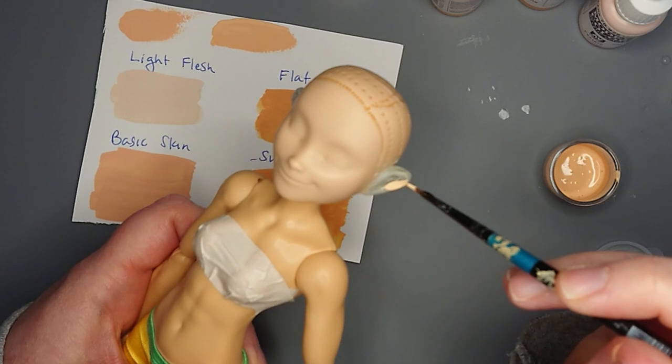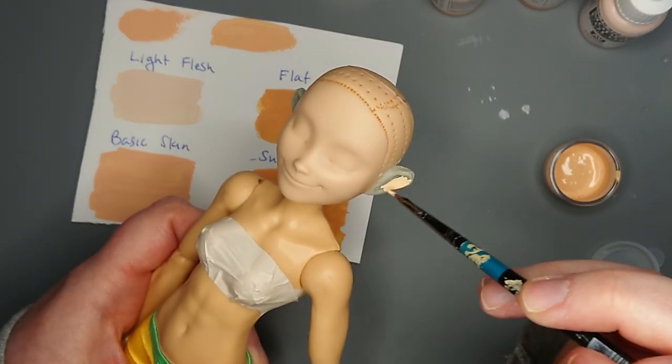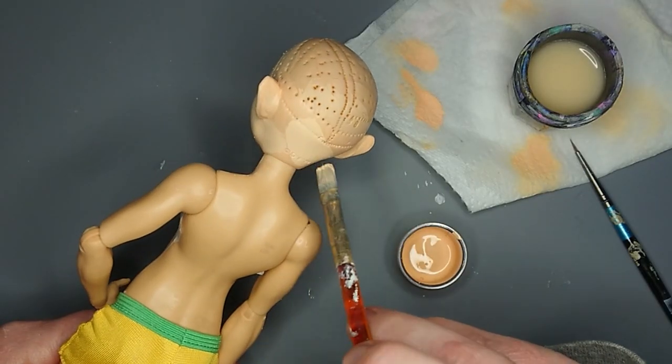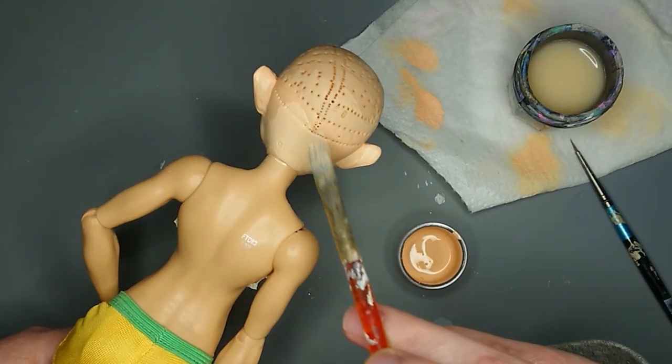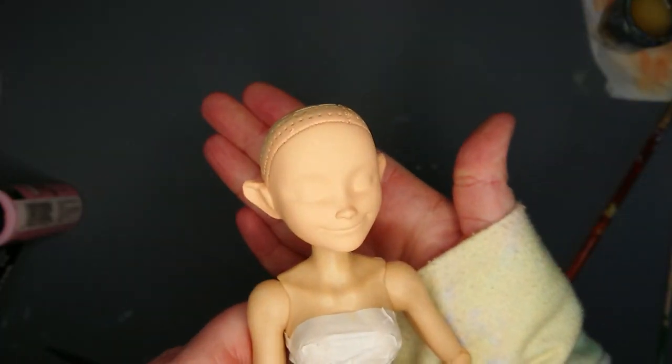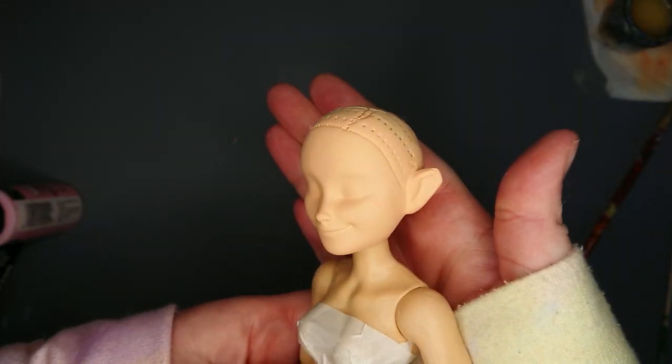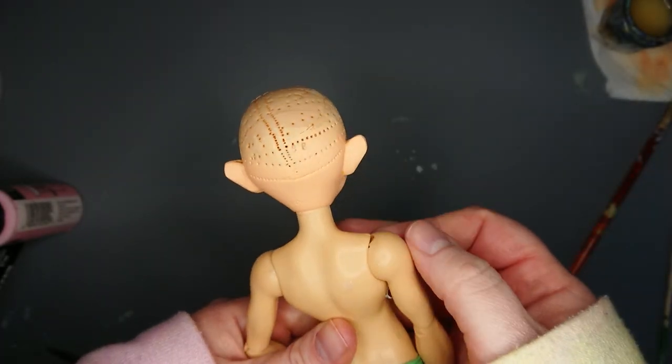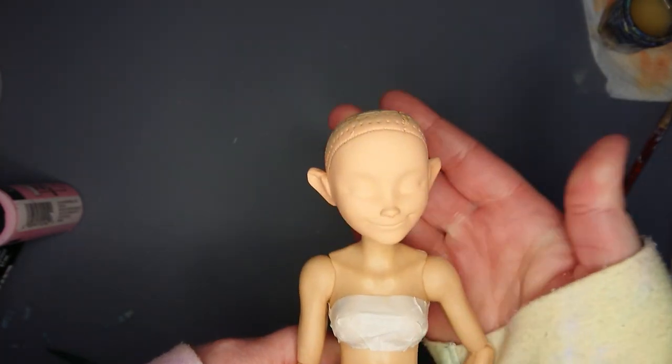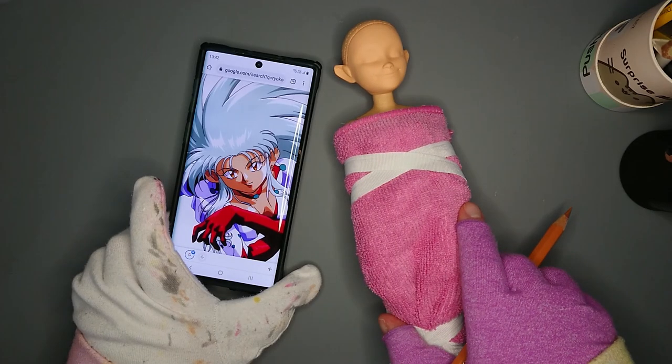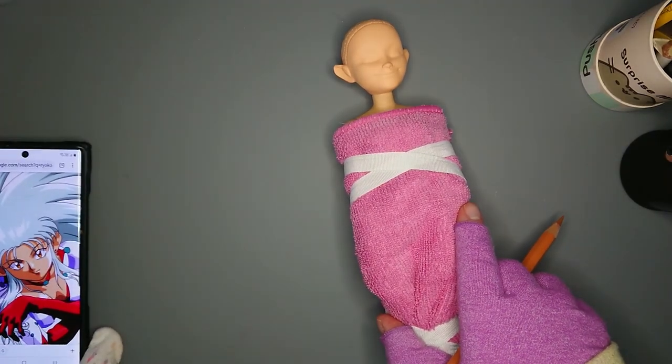Once I'm happy with the color, I begin painting the ears and the head in thin layers. I think I ended up with three or four layers, and it's honestly the best color match I have ever done. I give her a couple of sprays of Mr. Super Clear UV Cut Flat waiting 30 minutes in between each layer and get to work on her face.